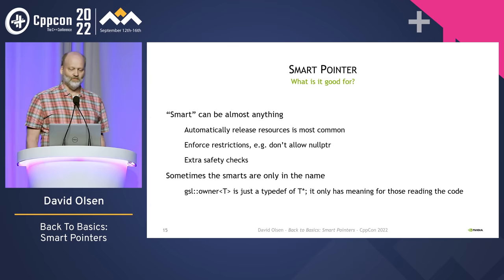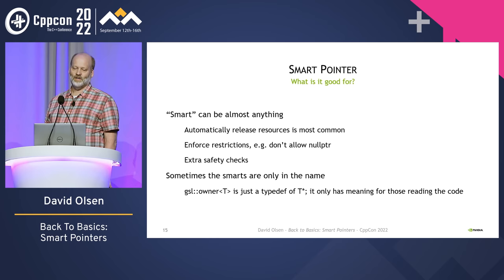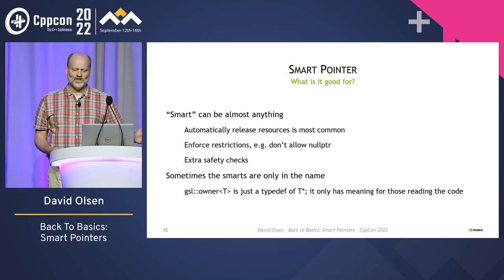In a few rare cases the smarts is not in the behavior but in the name. GSL owner is just a typedef of a raw pointer — it doesn't change the behavior, but it does communicate to the reader the intent of the code. I don't recommend using smart pointers that are just typedefs, but there are some situations where changing the code to use a real smart pointer would be problematic, so a typedef is better than nothing.